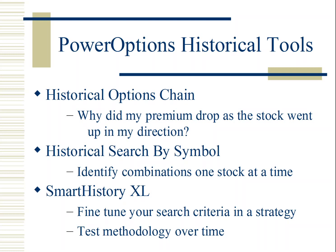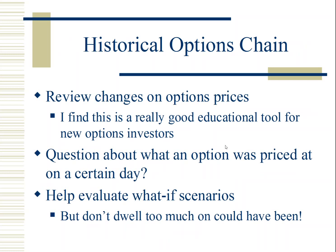The historical options chain is a good educational tool for new options investors. A lot of investors may think that if they bought a put and the stock falls, they'll make a profit. But many times we might buy into a put on a stock that just had bad news and fell 5–6% in a given day, and the next day the stock falls another 2–3% but our put doesn't gain in value. It's likely that we got in at a high implied volatility, and as implied volatility goes back to normal, we're losing even though the stock is dropping.